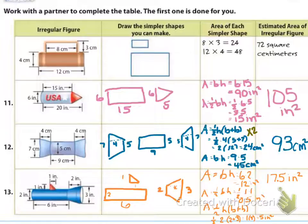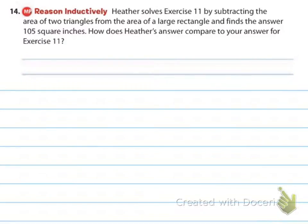So she did 20 times 6, get 120, and then she found the area of 6 times 5, I see what you're saying, and then divide by 2 is 15, and then she did 120 minus 15, so she got 125, the 105.